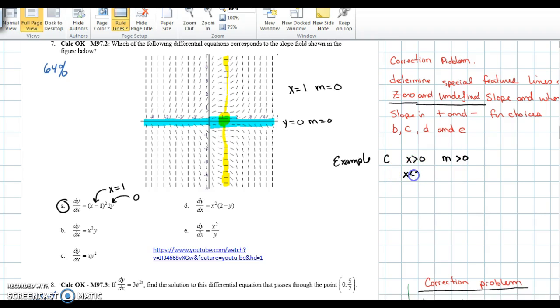When x is less than 0, y is always positive because it's squared. So when x is less than 0, m would be less than 0.